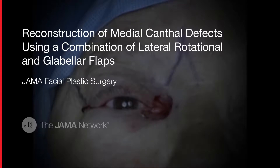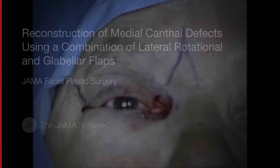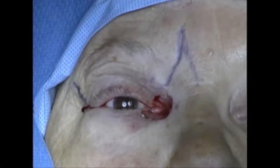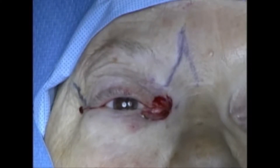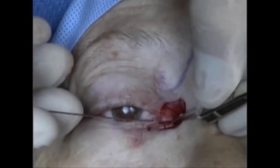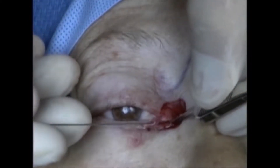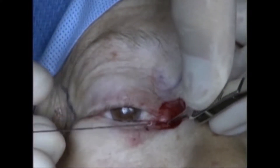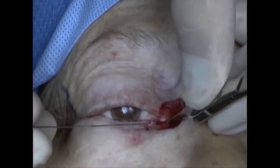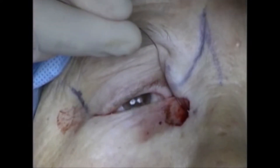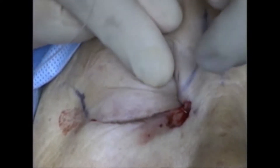This is Richard Allen at the University of Iowa. This video demonstrates repair of a deep medial canthal defect which straddles the medial canthal tendon with a combination Mustardé and glabellar flap. The patient has status post-excision of a basal cell carcinoma which has resulted in an upper and lower canalicular defect.